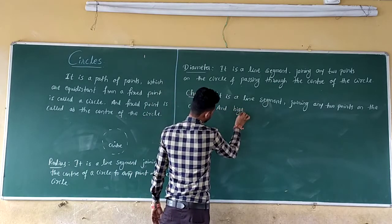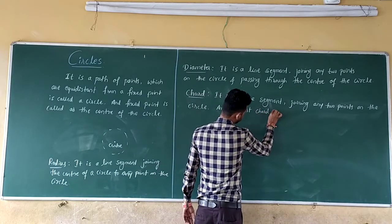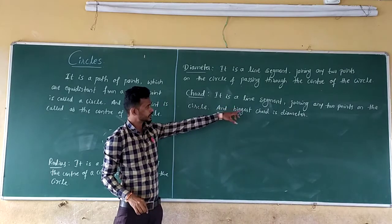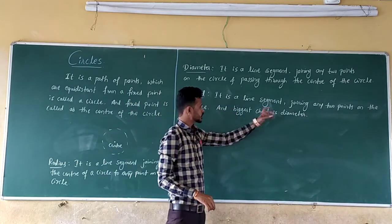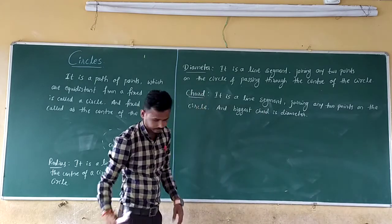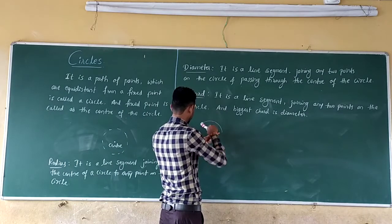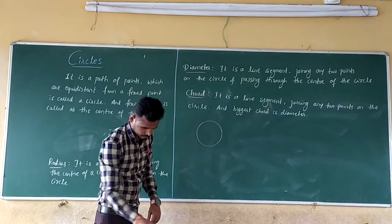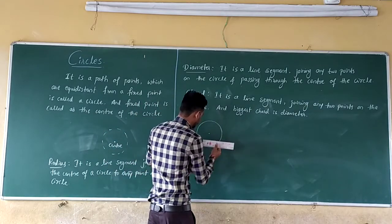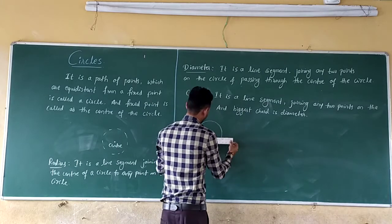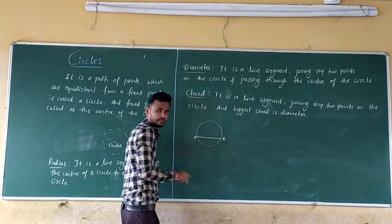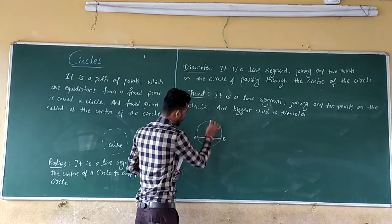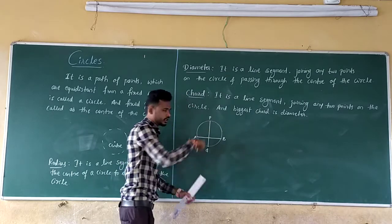And the biggest chord is the diameter. So it is a line segment joining two points on this circle, and the biggest chord is the diameter. See here, A and B are two points. So the line segment joining any two points on this circle is the chord, and the biggest chord is the diameter.